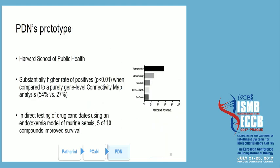PDN is largely under development — the paper is still being written. But we have a prototype which has already been used at the Harvard School of Public Health, and has been compared with other analyses like a C-map connectivity map analysis, which is purely gene-level while ours is pathway-level. It has been shown to achieve a substantially higher rate of positives than others, including random.